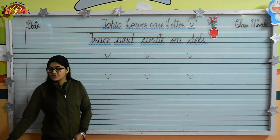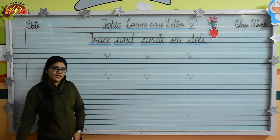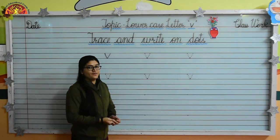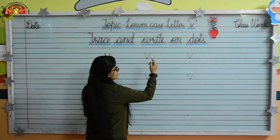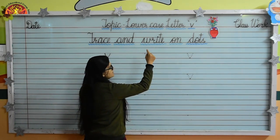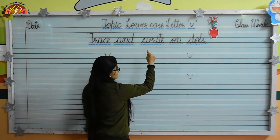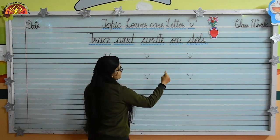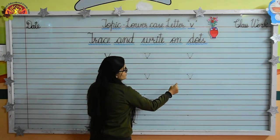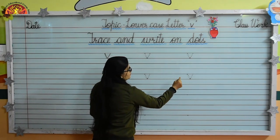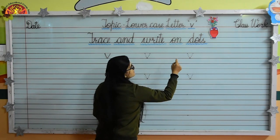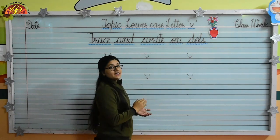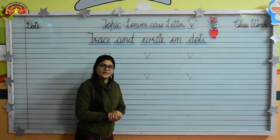So first we will draw lowercase letter V in the air. So raise your hand and draw a slanting line. Now from this dot, we will draw one more slanting line like this. Lowercase letter V.